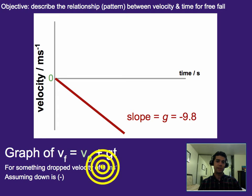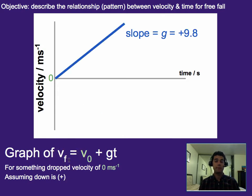In this case, if I had an initial velocity of zero, it's going to start at the origin. If we're assuming down is negative, then we always get a slope of negative 9.8, or negative 10, if that's what you're using. If instead we wanted to assume down was positive instead of negative, it'd be the same graph, it would just be going up instead, so we would have a positive 9.8 slope.